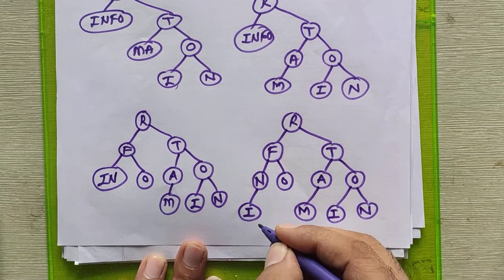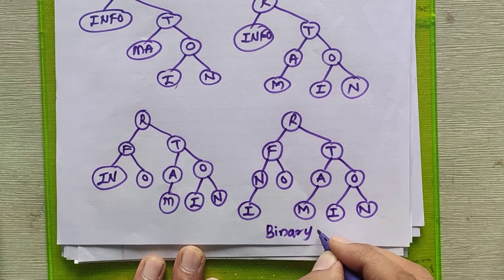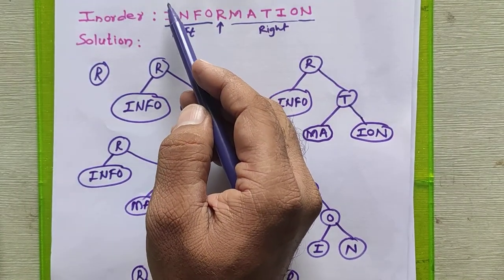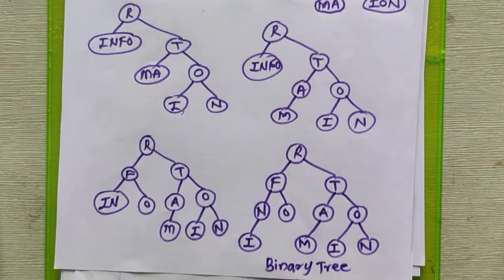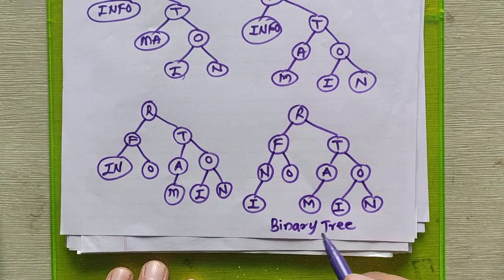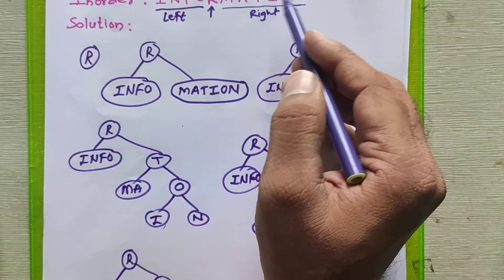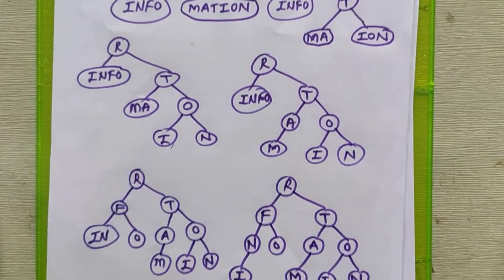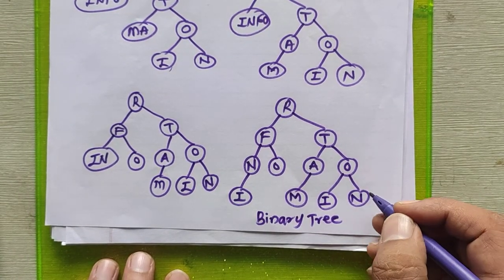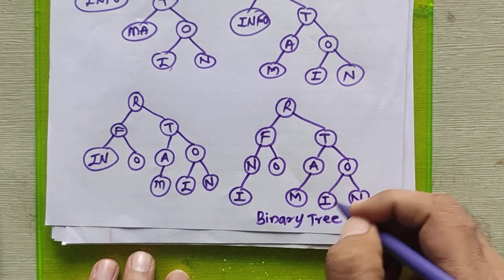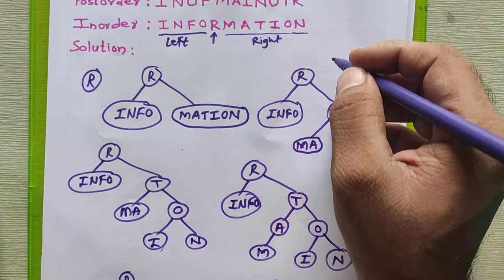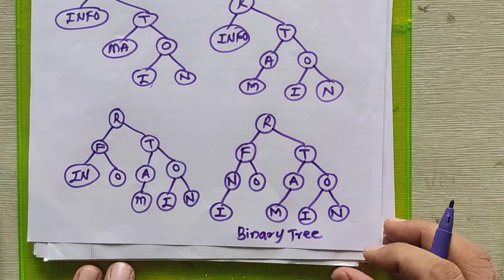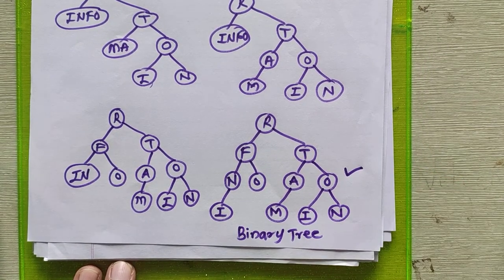This is our binary tree because we have covered all the elements from the given traversal sequences. We have successfully placed the last element I as well. This is the binary tree obtained from the given post-order and in-order traversal sequences. To check whether this tree is correct, we will traverse the entire tree in post-order and in-order fashion. If we get the same sequences that were given in the question, then the tree is correct; otherwise it is wrong.